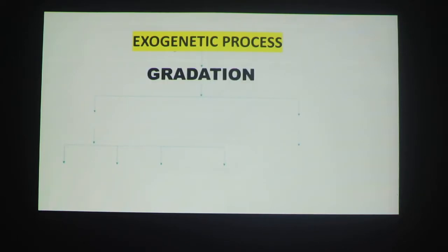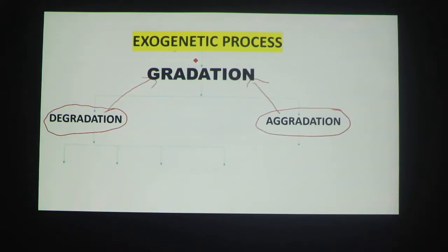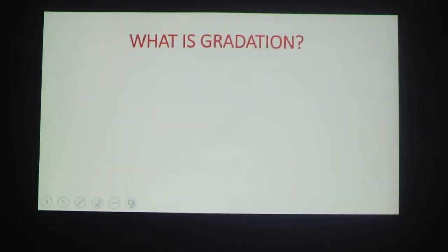The process is Gradation. Then we will do degradation and aggradation. The combined gradation process includes degradation — which involves weathering, erosion, denudation, and mass wasting — whereas aggradation is deposition. So let us study what gradation is.